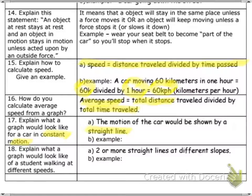Eighteen says, explain what a graph would look like of a student that's walking at different speeds. Well, it says two or more straight lines with different slopes. So let's say that someone is walking, this is kind of slow, and then they speed up, it's going to go, then maybe they slow back down again. Okay, so that's different speeds, okay? There are two or more straight lines, but at different slopes, so what I drew, that's what that would look like, okay? All right.